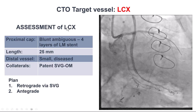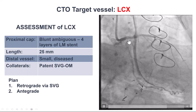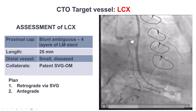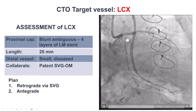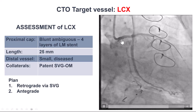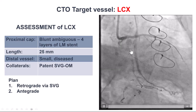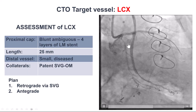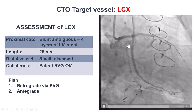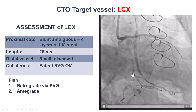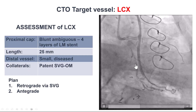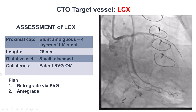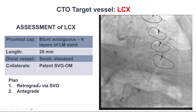To assess the circumflex CTO, there is a blunt, ambiguous proximal cap, and there are four layers of stents covering the ostium of the circumflex. The length is about 25 mm. The distal vessel is small, diffusely diseased, and fills through the vein graft that can be used for going retrograde.